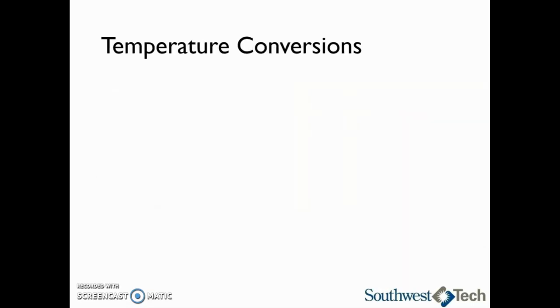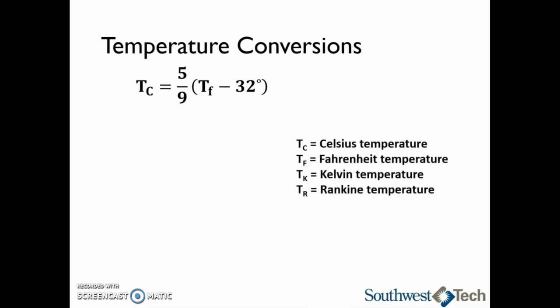Let's take a look at how we can convert between scales. Celsius temperature is equal to 5/9 times the quantity Fahrenheit temperature minus 32 degrees. Fahrenheit temperature is equal to 9/5 times the Celsius temperature plus 32 degrees. Kelvin temperature is equal to Celsius temperature plus 273. Last, Rankin temperature is equal to Fahrenheit temperature plus 460 degrees. Pay close attention to where you see parentheses when you are converting between systems.